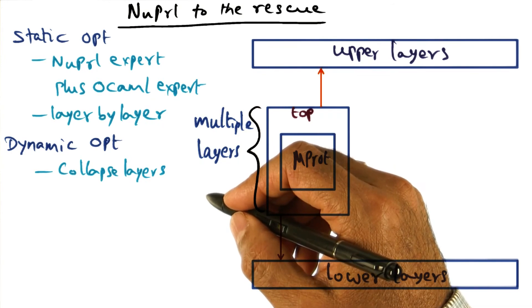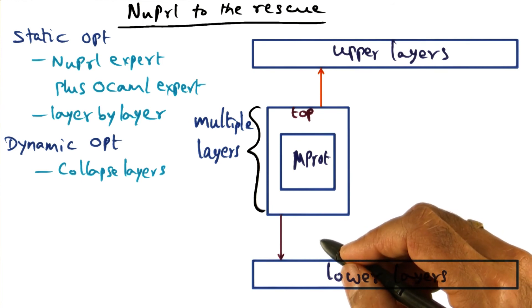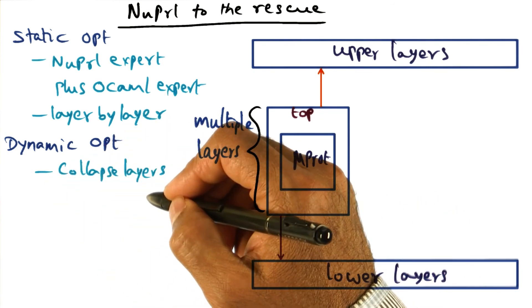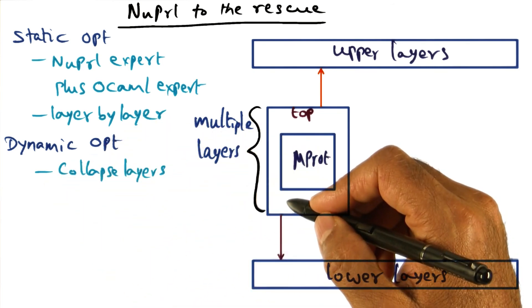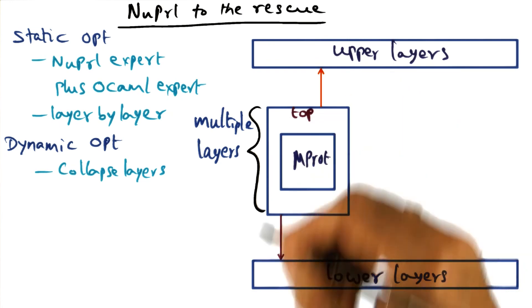and it is the power of that theorem proving framework which is actually going to do that for you. And in order for that theorem proving framework to do this work, what we need to identify is what are common things that happen in order to do this collapsing of layers.